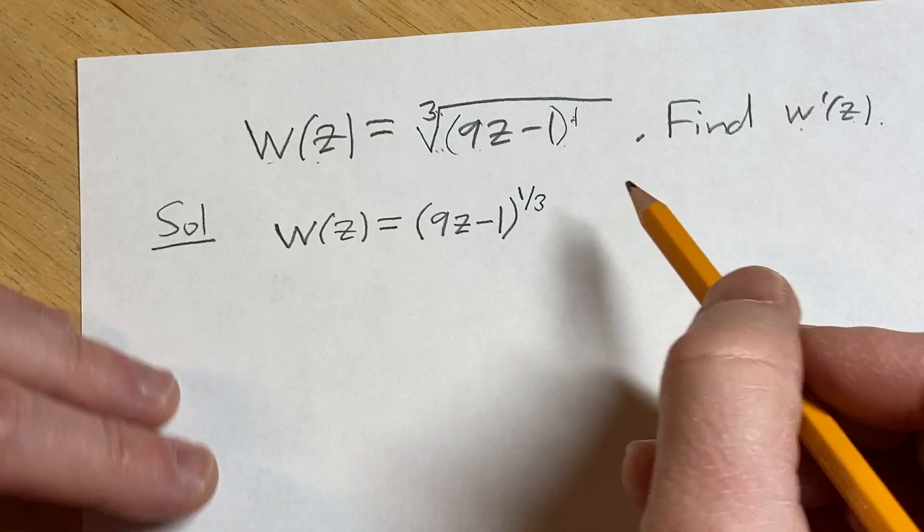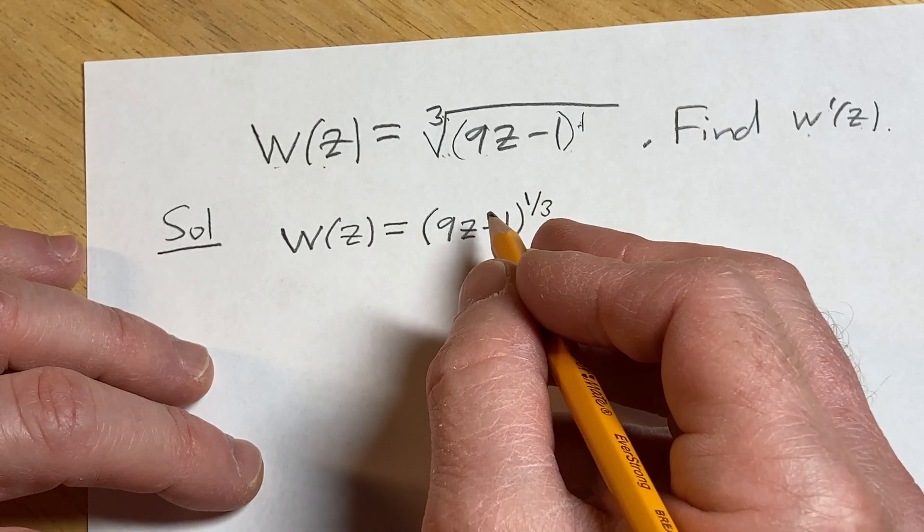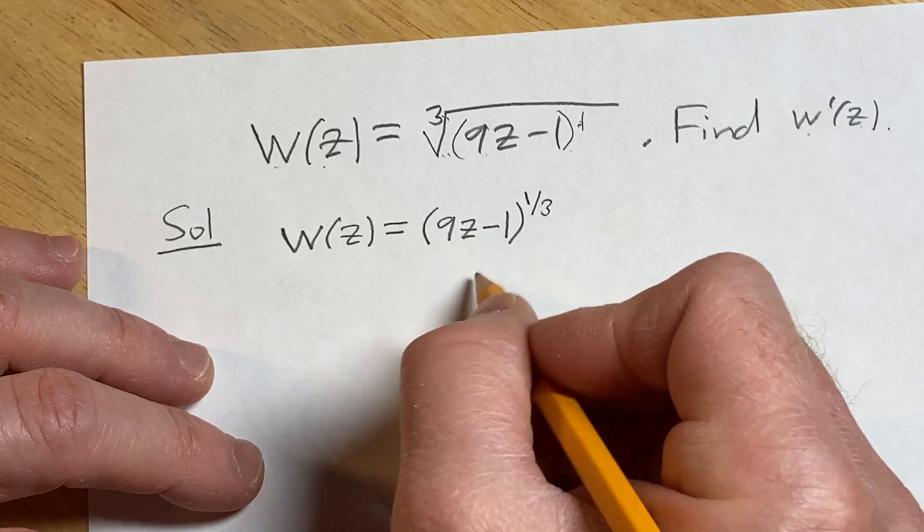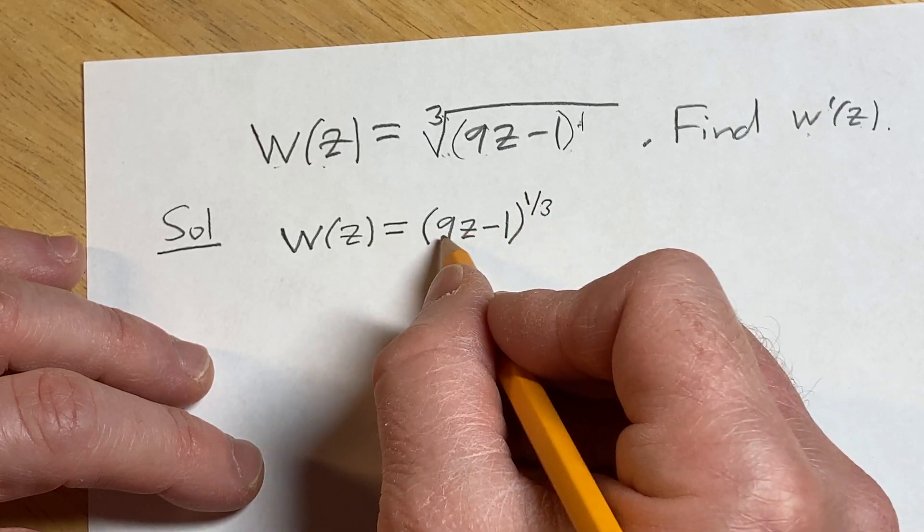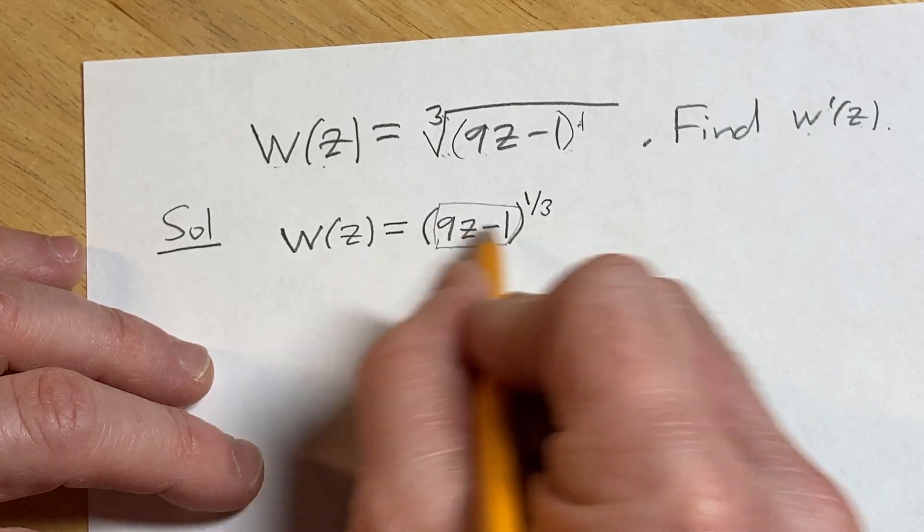Now we can invoke the power rule and chain rule for derivatives. We have something to a power, so we use the power rule, but we need the chain rule because the inside function isn't just z—it's 9z - 1.